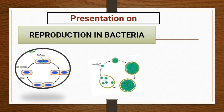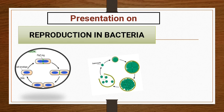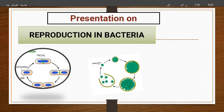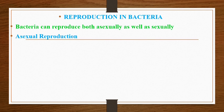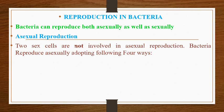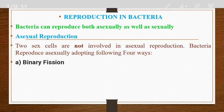In bacterial reproduction, there are two types: sexual reproduction and asexual reproduction. Bacteria can reproduce both asexually as well as sexually. In asexual reproduction, two sex cells are not involved. Bacteria reproduce asexually by adapting the following four ways.